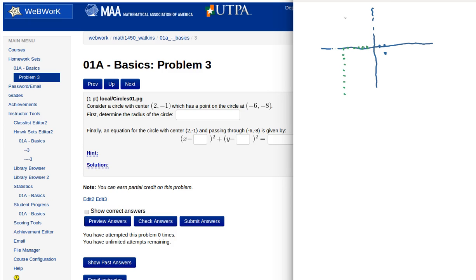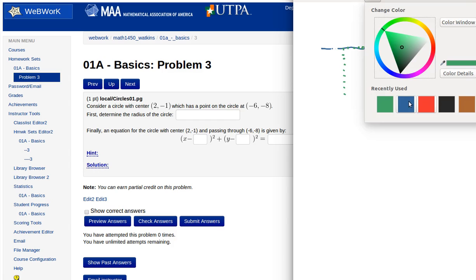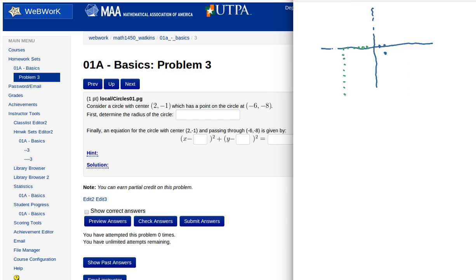So that point right there is a point on the circle. And there's the center. So imagine taking a string, hooking it on to the center, and drawing that circle. So the circle is going to look something like this.